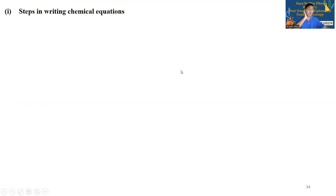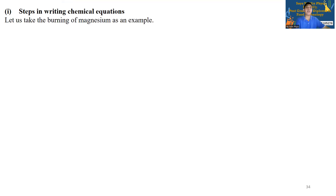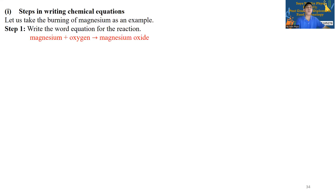Now, start writing the chemical equation. Let us take the example of magnesium. The magnesium reacts with oxygen. Write the word equation for the reaction.